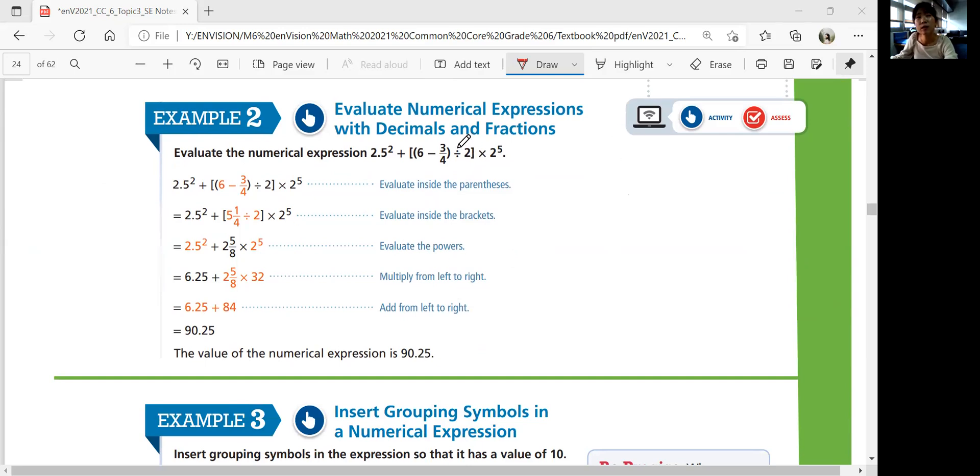Solve the parentheses from inside out first. So subtract 6 and 3 over 4. That's 5 and 1 fourth, divided by 2, 2 and 5 eighth.